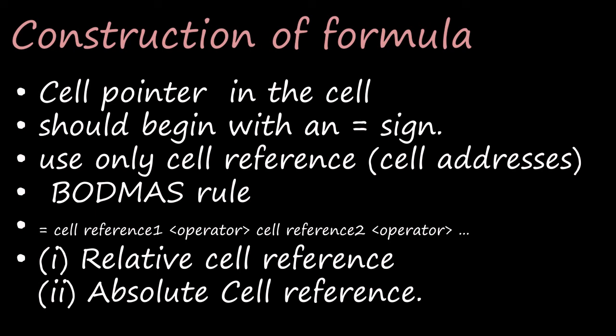To construct a formula, follow these steps: the cell pointer should be in the cell where you want to display the result - the active cell must be where you need the result. The formula should always begin with the equal to sign. In a formula, you should use only the cell reference - that means the cell address - and not the actual value, inside the formula bar.